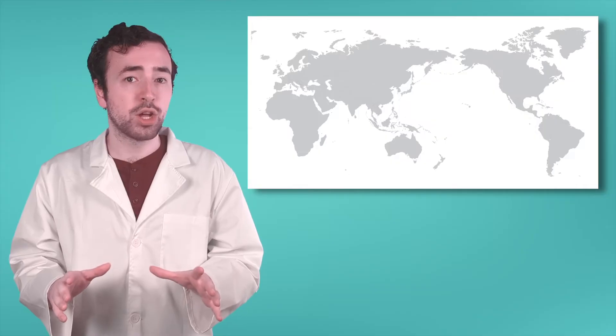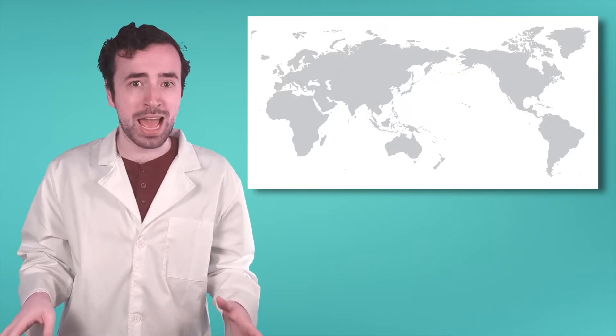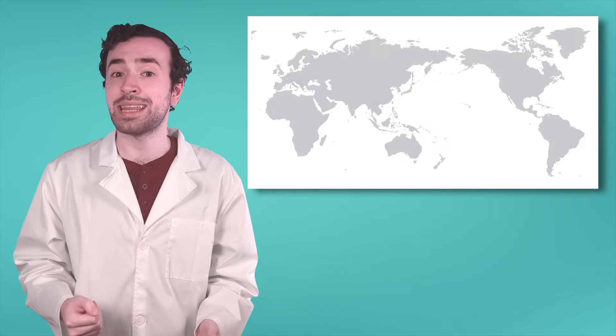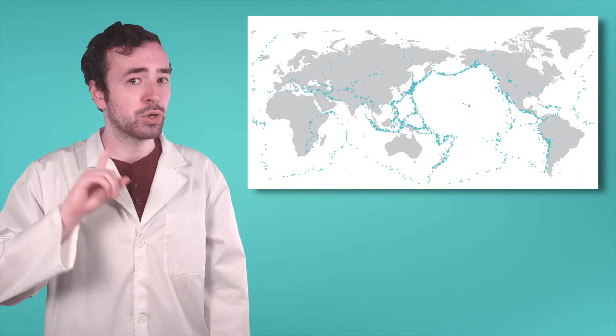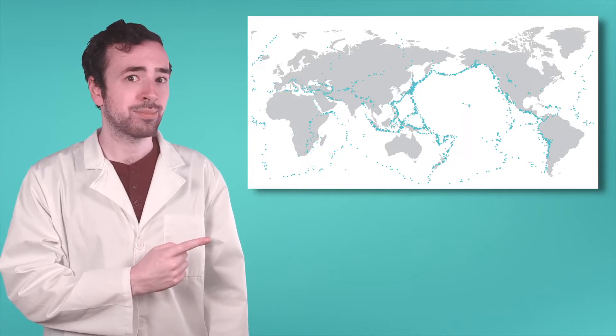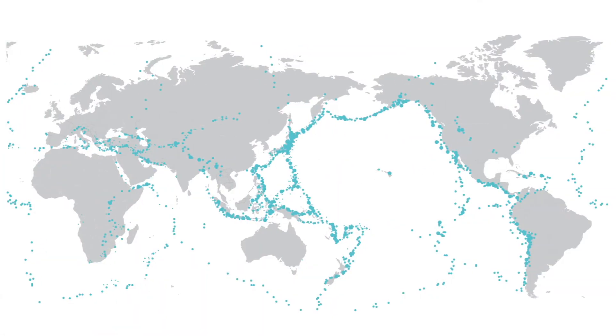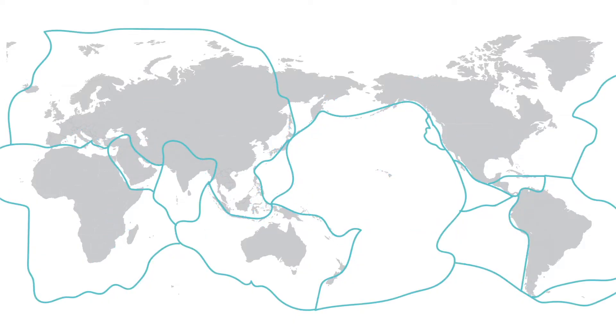Scientists were confused about this too, so they began to track earthquakes. When they did that, they noticed something interesting. In some places earthquakes almost never happen, and in others they happen again and again. They recorded where earthquakes happened on a map and it looked like this. What do you notice about this earthquake map? It looks just like a puzzle, right?